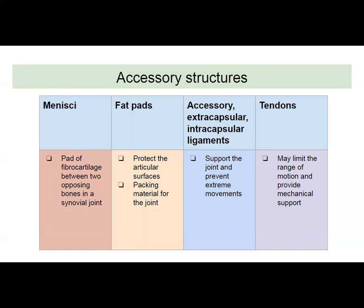Let's talk about accessory structures. You may have heard of the lateral or medial meniscus — it's just a pad of fibrocartilage between two opposing bones in a synovial joint. It forms a pad, and along with fat pads, it protects the articular surfaces and creates packing material for that joint.